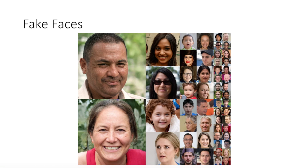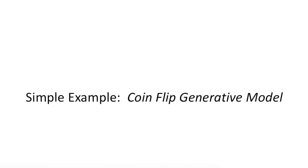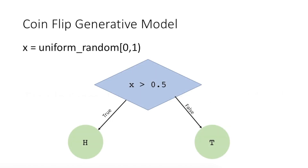To wrap our heads around this, let's think of a simpler example, like coin flips. We could specify a generative model of coin flips like this: first, draw a random number between 0 and 1. Then, if the number is greater than 0.5, let's say it's heads, otherwise tails. With this, I can simulate coin flips without having to actually flip coins, because I have a reasonable model of the process.